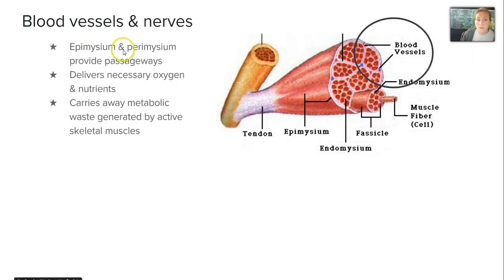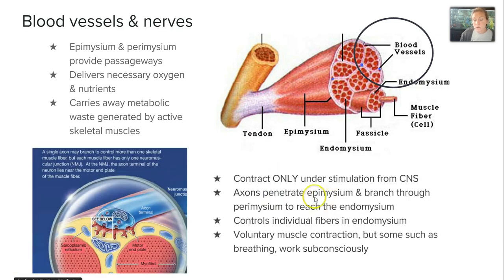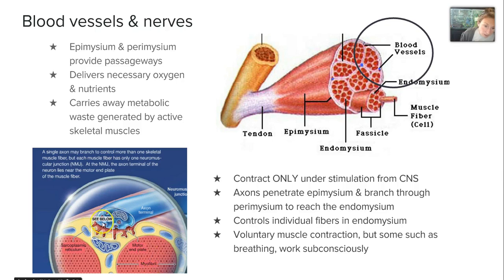Blood vessels and nerves are found in the epimysium and perimysium. They deliver necessary oxygen and nutrients to the muscle and carry away any metabolic waste generated by skeletal muscle activity. Muscles can only contract under stimulation from the central nervous system. Axons can penetrate the epimysium and branch through the perimysium to reach the endomysium, where the axon terminal reaches all the way through to a single muscle fiber. This controls the fiber and results in voluntary muscle contraction, though some voluntary contractions occur subconsciously, such as breathing.